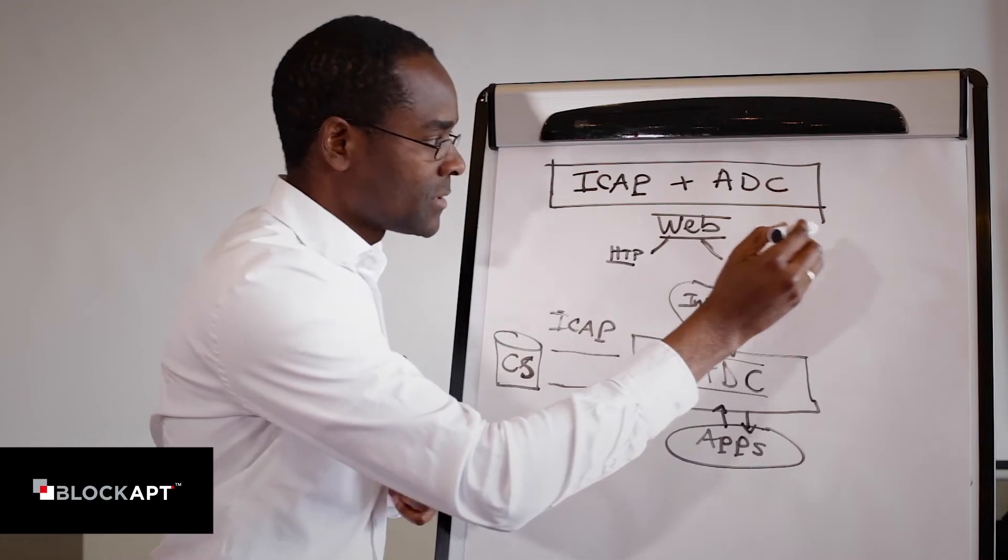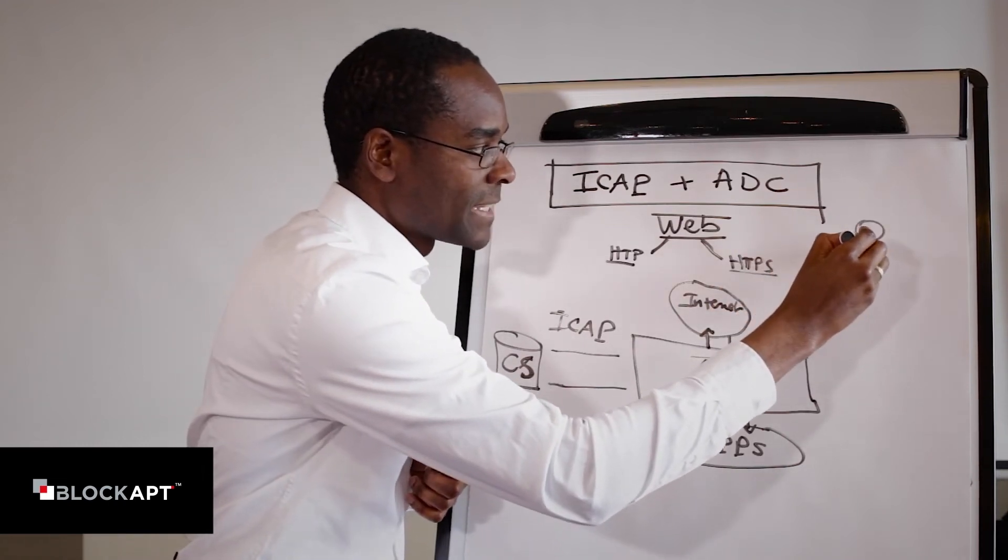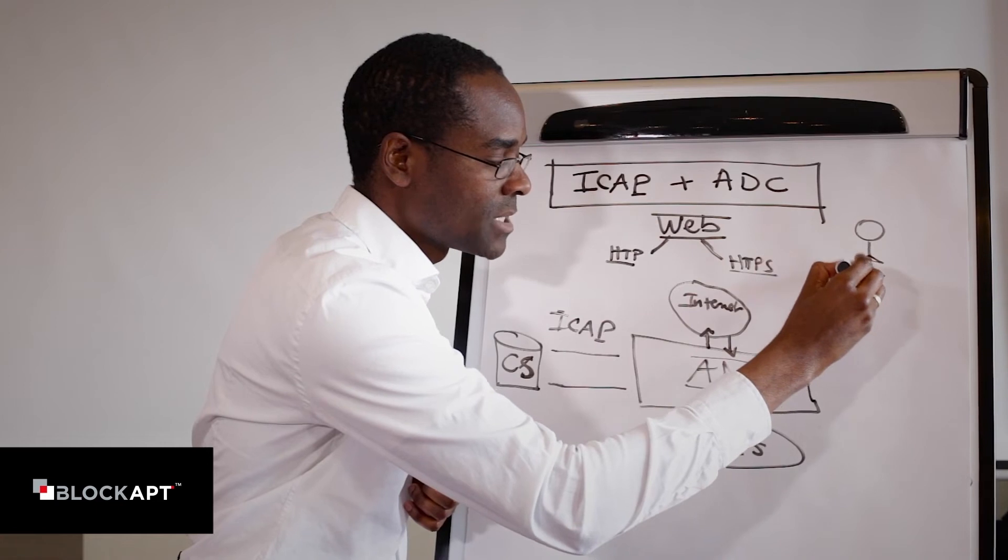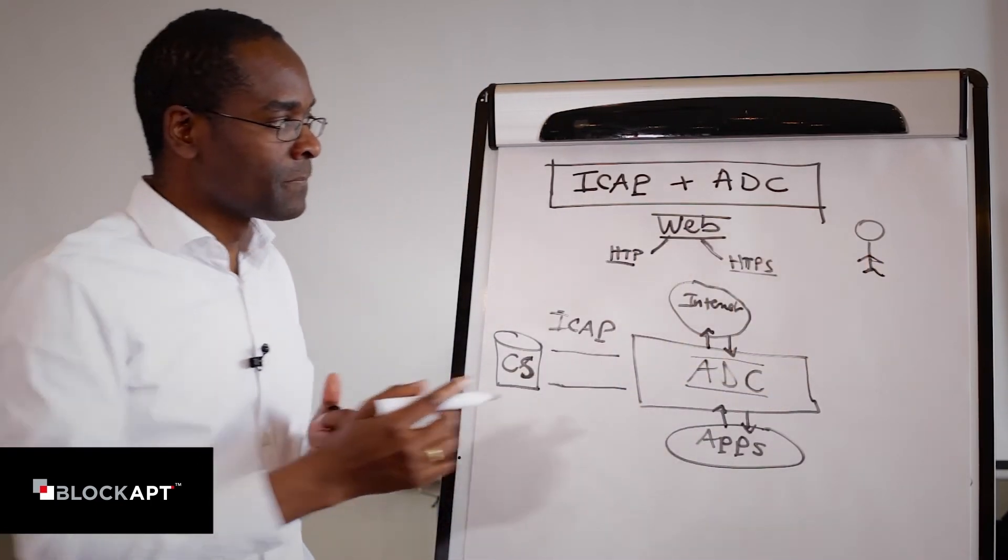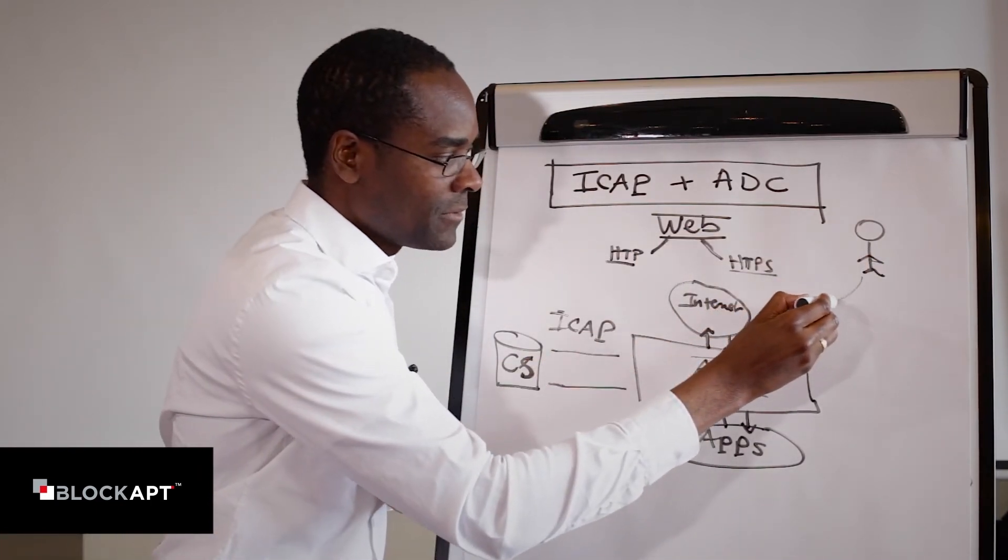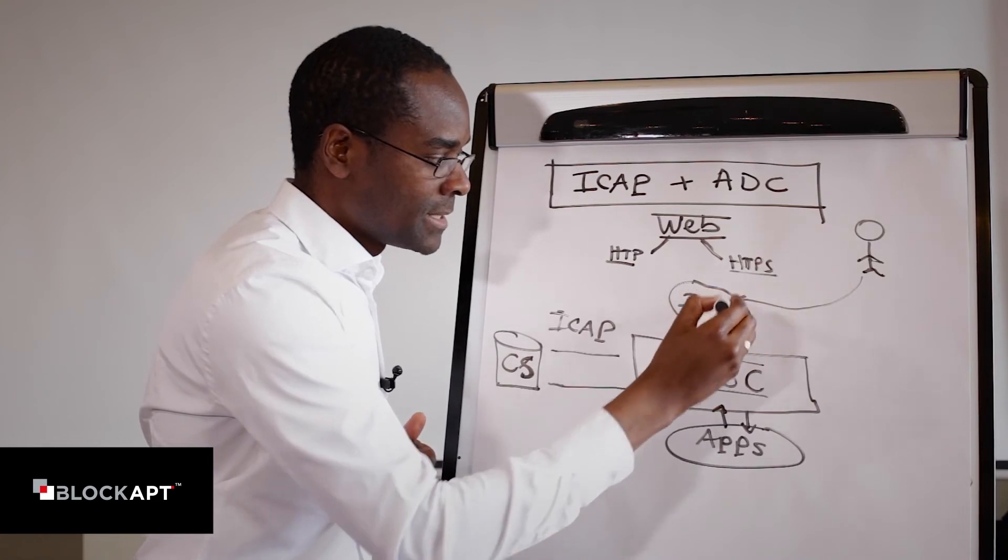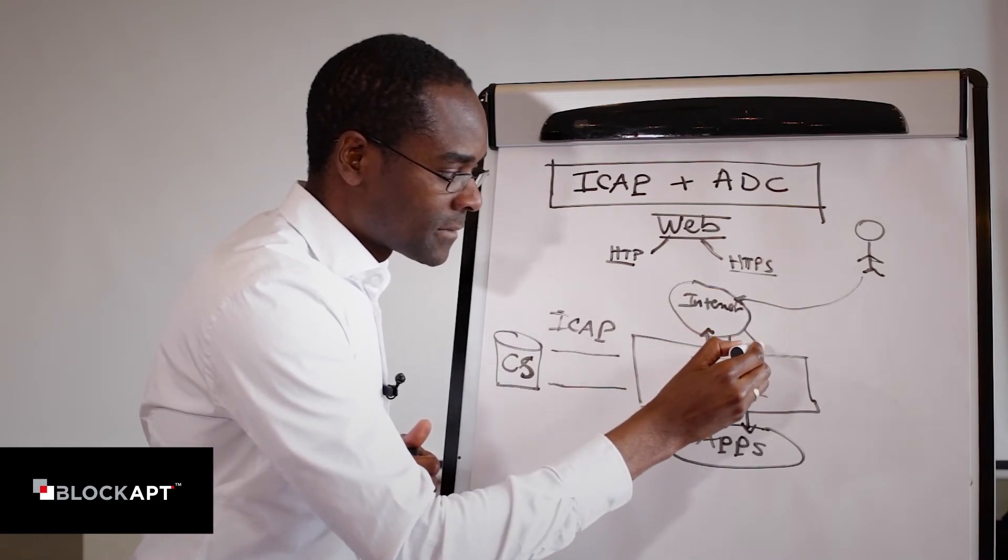We can have a user here. So I'm going to draw a user sitting somewhere here. Two tiny legs for our little user. So we can have traffic flowing through the internet, hitting our ADC, as you can see here.